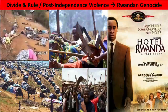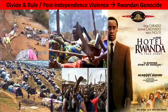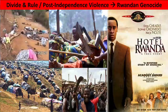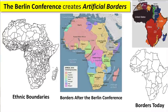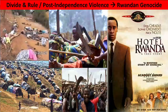Eventually Rwanda is going to become independent and the Belgians will leave. This is one of the long-term impacts of artificial borders: because you've shoved different people together and there's anger and hatred between these groups, once the imperialists leave, a lot of times this anger can break into massive violence. The Rwandan genocide is one example of this.